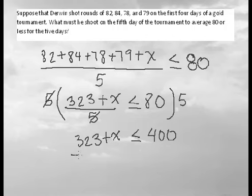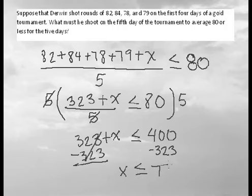Now all we have to do is subtract 323 from both sides and we get that x has to be less than or equal to 77.